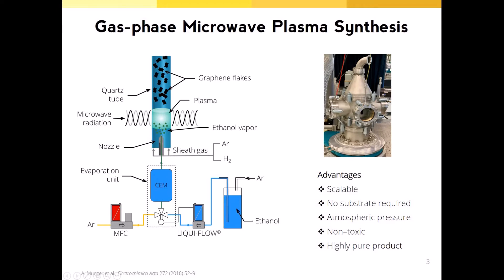These fragments reassemble into few-layered graphene flakes downstream of the plasma region. This method is potentially scalable, requires no substrate, and leads to the production of high-quality graphene.